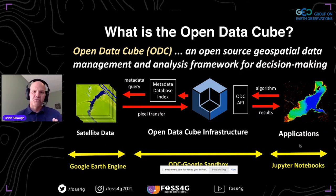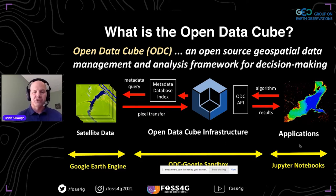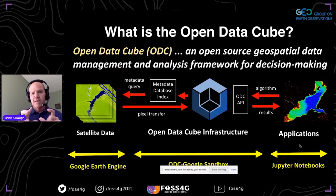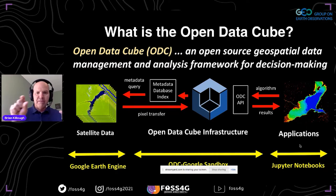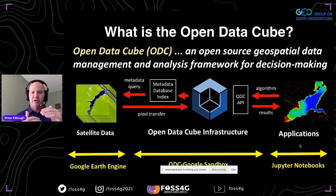The Open Data Cube is essentially a data management and analysis framework. Moving from left to right: on the far left is the data — we typically go to a cloud to get that; in our sandbox case, we utilize Earth Engine. In the middle is the Open Data Cube infrastructure, with installation software that connects us to the applications on the far right, which are Jupyter Notebooks written in Python. The sandbox provides simple processes — just a couple lines of code loading a few utilities — that allow us to tap into that data and run applications.